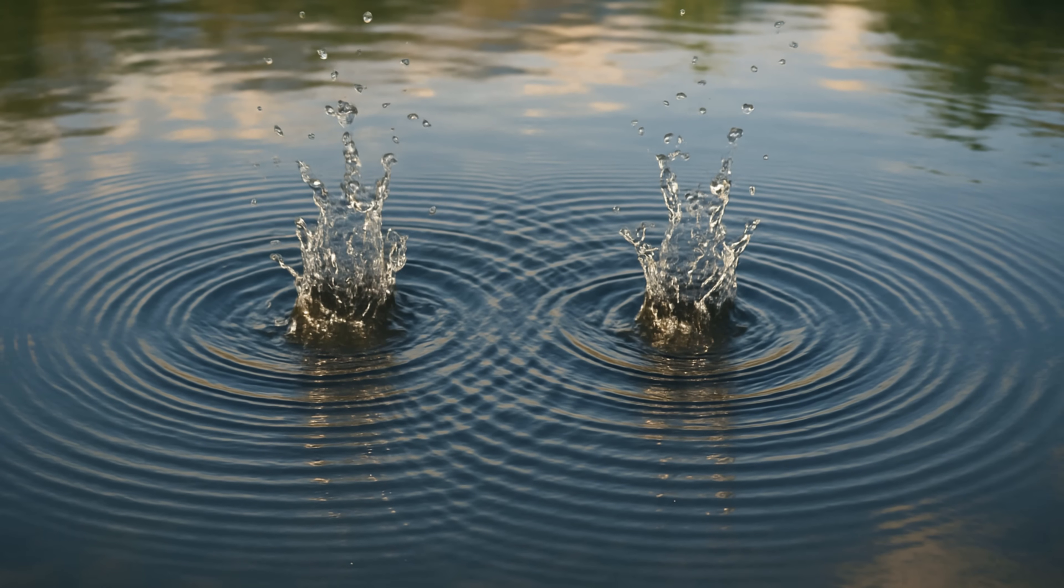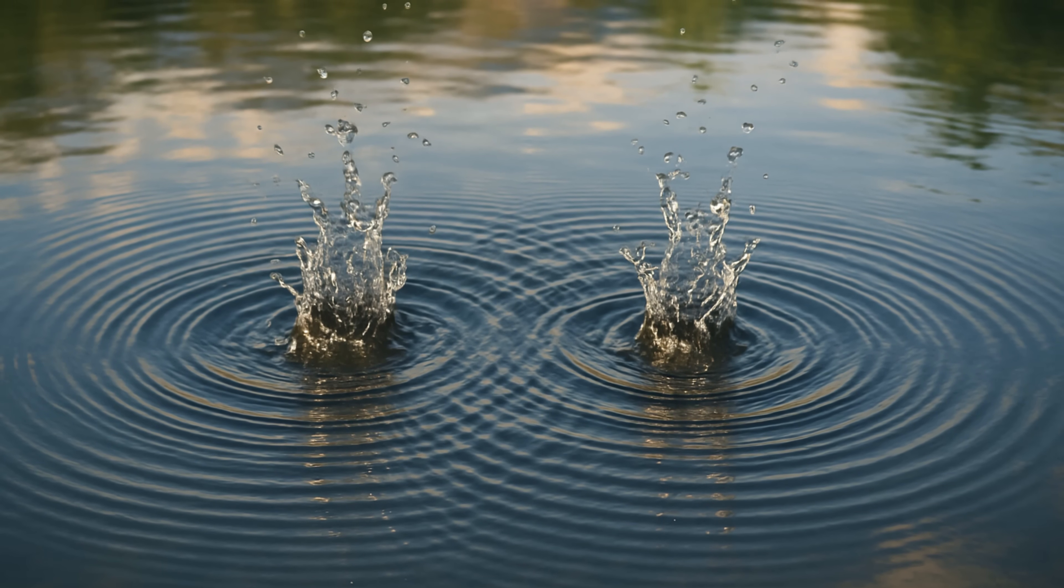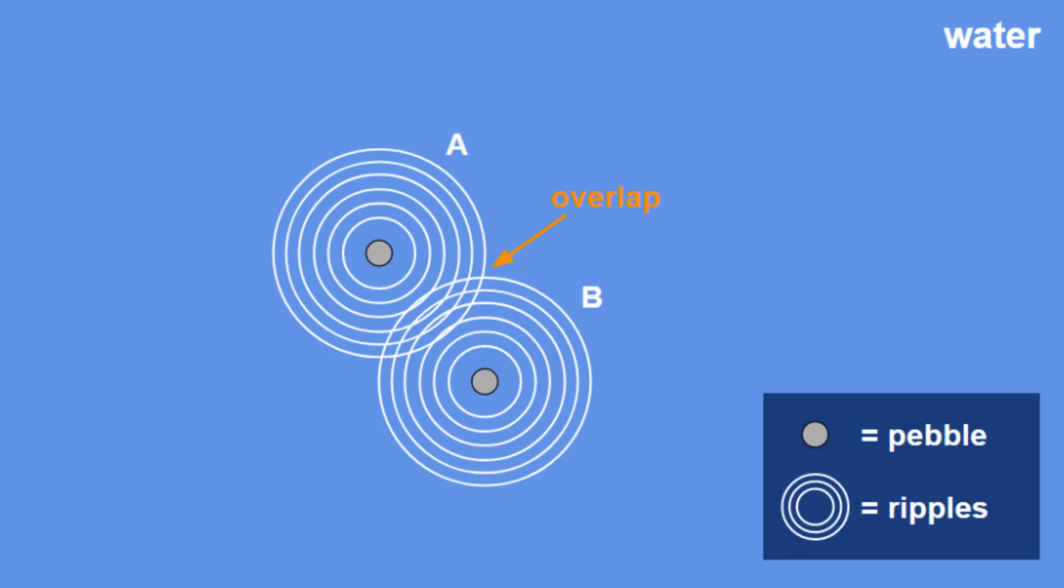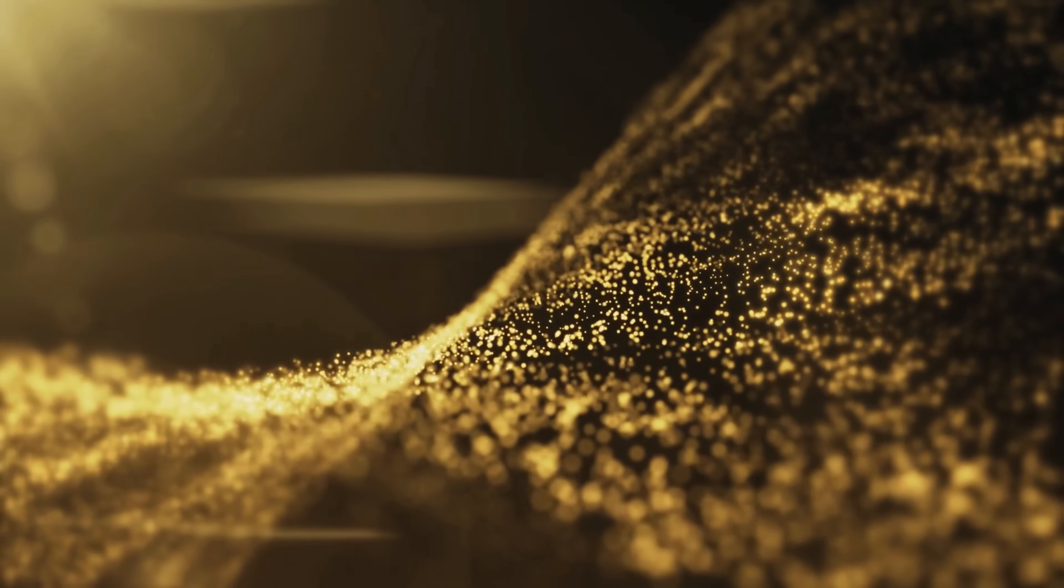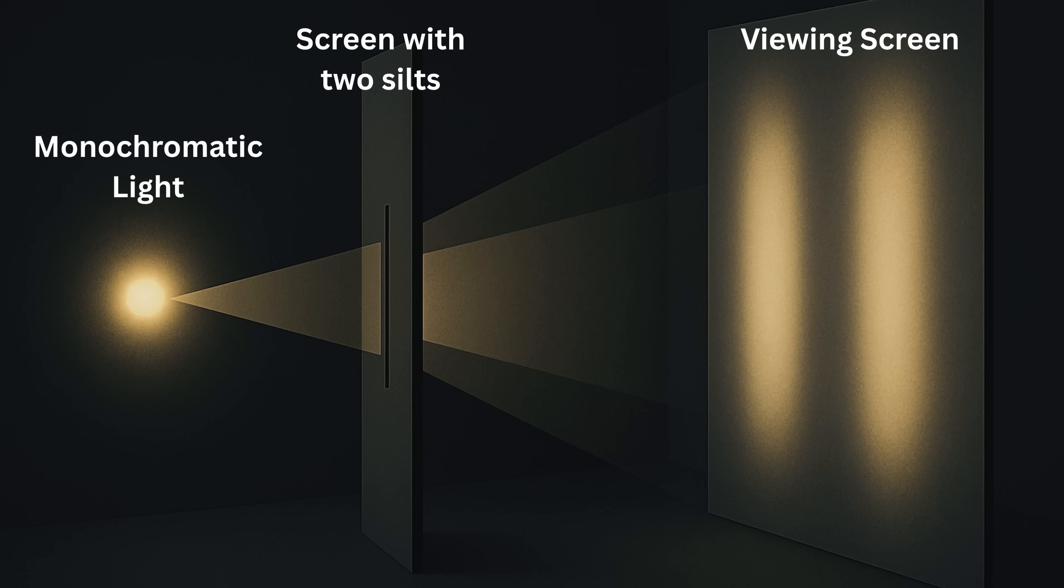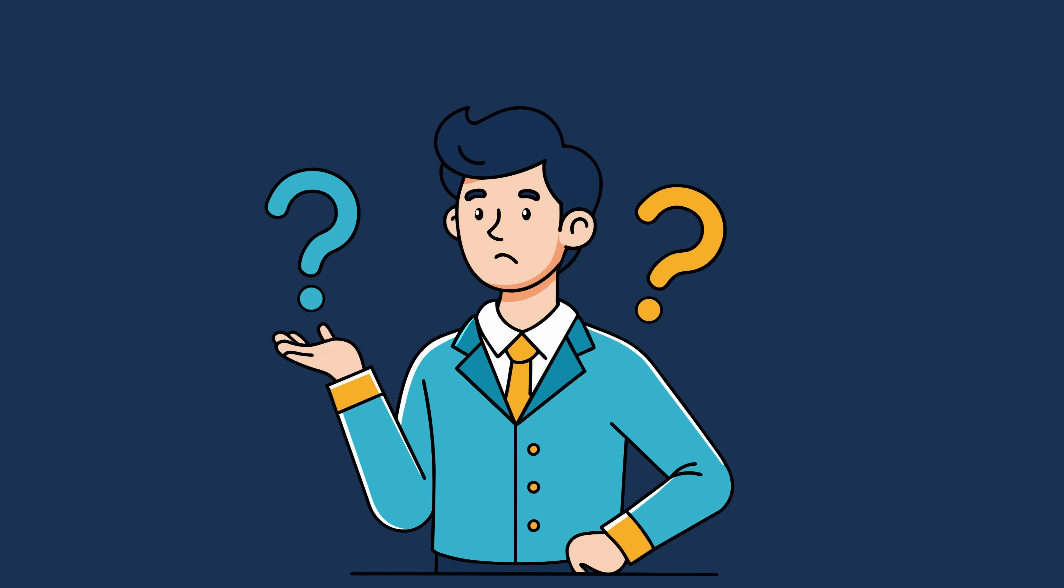Now, imagine instead that you drop two pebbles into a pond at the same time. The ripples spread outward and overlap, creating a pattern of peaks and troughs. This is interference, a signature of wave behavior. So, if light was just a stream of particles, it should behave predictably with two bright spots where the light passed through the slits. So, what was the verdict?